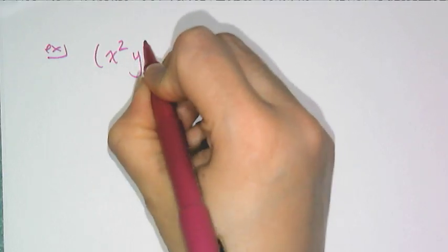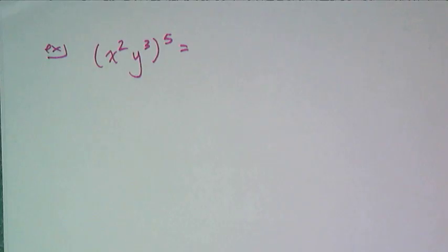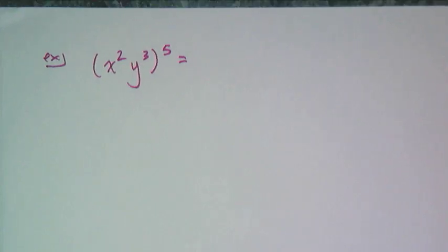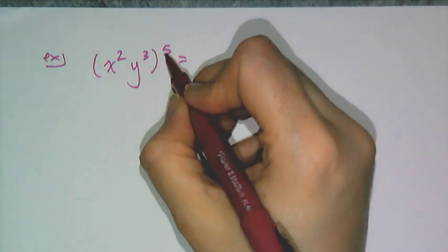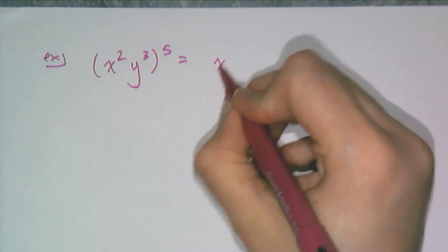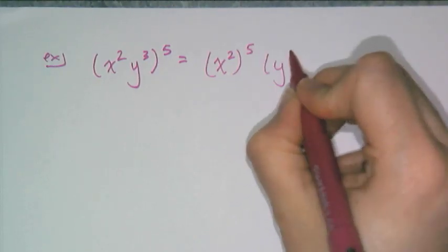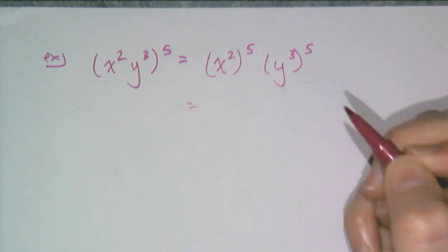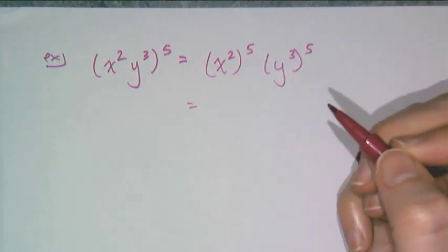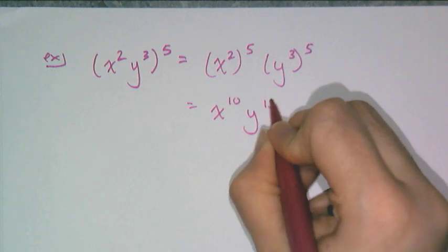Let's do a couple of examples. If I have x squared, y cubed, raised to the fifth power, the product to a power rule says I raise x squared and y cubed each to the fifth power: x squared to the fifth times y cubed to the fifth. Then using the power rule I get x to the tenth, y to the fifteenth.